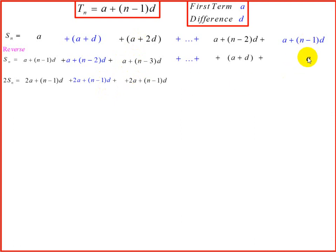And if we add the last ones, we'll get 2a plus n minus 1 into d. So if we add coming down, we will get the same answer continuing, which is 2a plus n minus 1 into d.